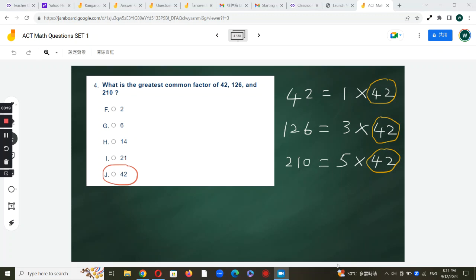Let's work on the ACT math question today. Question number 4: what is the greatest common factor of 42, 126, and 210?